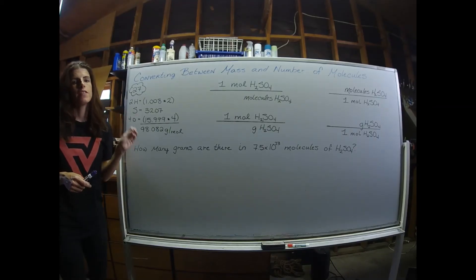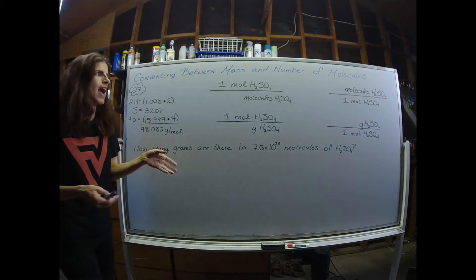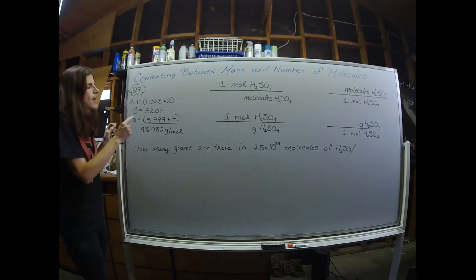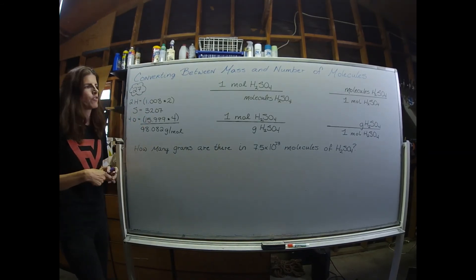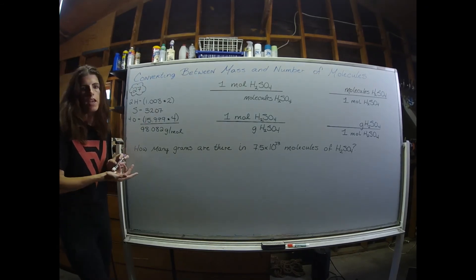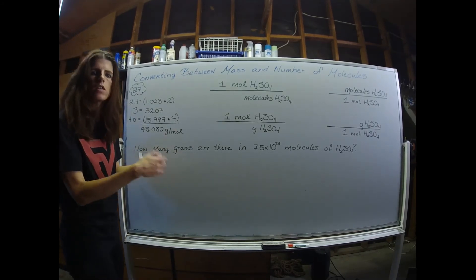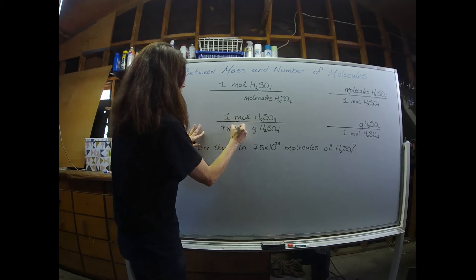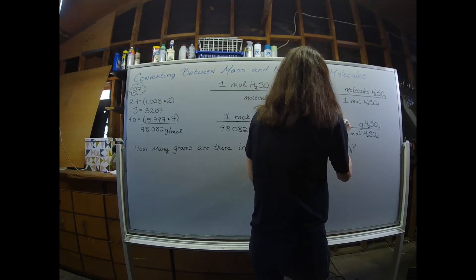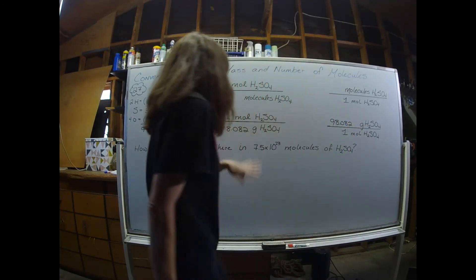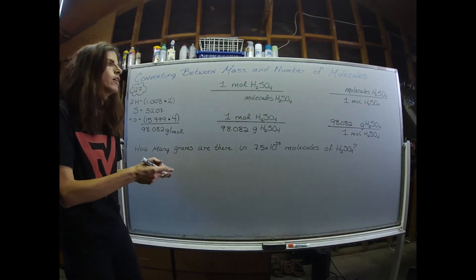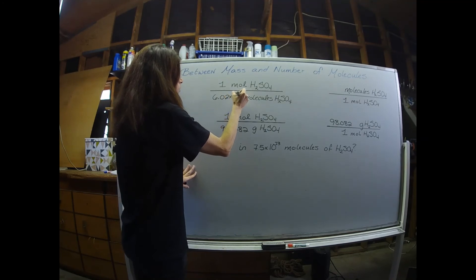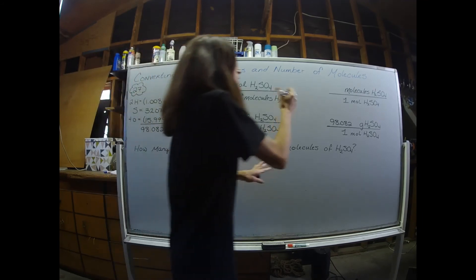For numbers 27 and 28, instead of converting between mass and atoms we're converting between mass and number of molecules. We need to calculate molar mass first — I got 98.082 grams per mole for H₂SO₄, commonly known as sulfuric acid. I'll also set up the Avogadro's number conversion factor: 6.02 times 10 to the 23rd molecules of sulfuric acid in one mole of sulfuric acid.